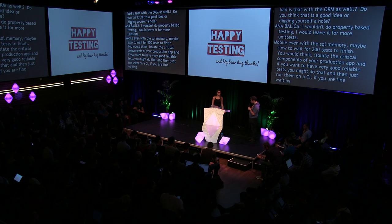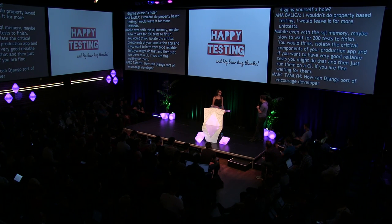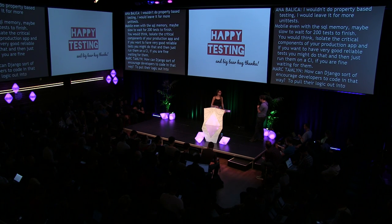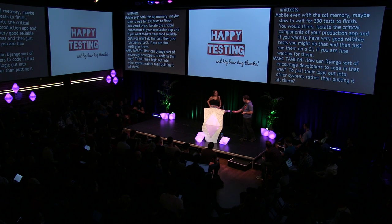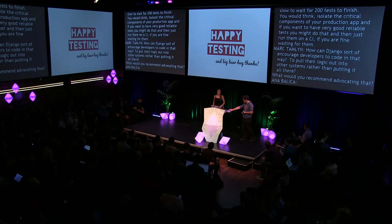On encouraging developers to pull logic out of Django components: the entry point might be documentation. There is nothing in the docs currently that advises against putting certain things in certain places. For example, being more explicit about views — not bloating them with every possible type of logic. Django already discourages complex conditionals in templates by stripping down what's allowed. Documentation could be improved, and that could be worked on during sprints.